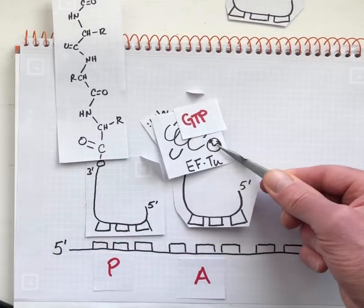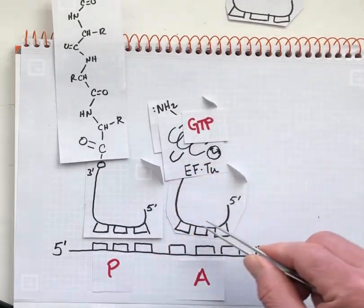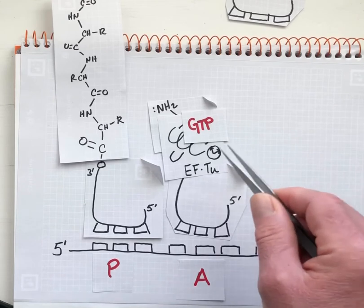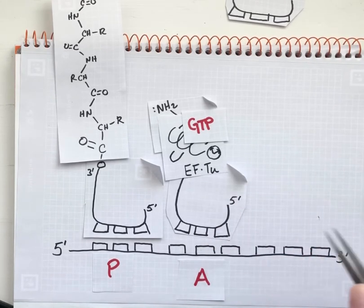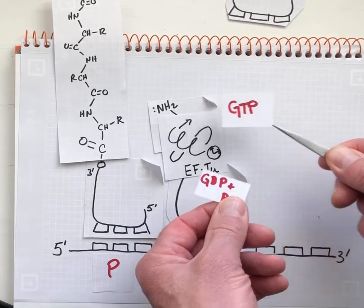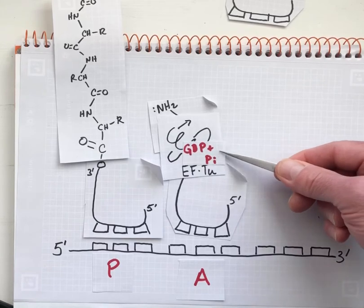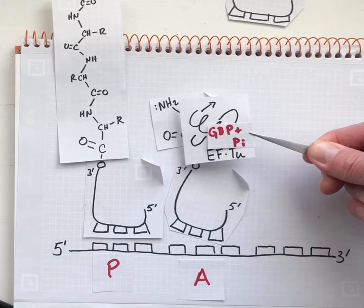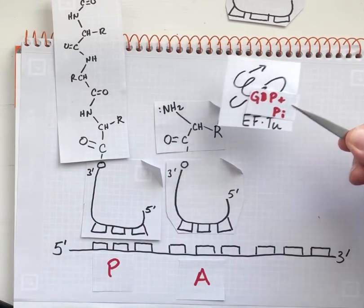If this is the correct cognate aminoacyl tRNA, now it lasts long enough at the A site to undergo this hydrolysis reaction. So GTP is converted to GDP and inorganic phosphate, and that triggers the elongation factor Tu to leave.